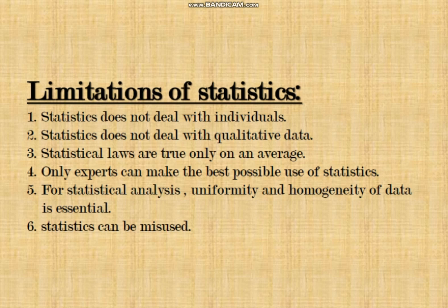The third limitation is that statistical laws are true only on an average — the results given by statistics are not exact; they are at best approximate. For example, you look at the performance of a batsman by his average score. If Dhoni has an average score of 50, that does not imply he scored exactly 50 runs in each and every match. In some matches he might score 150, 200, 100, 96, 86, or even 0. That average of 50 is a composite of all those numbers, so statistical laws are true only on average.